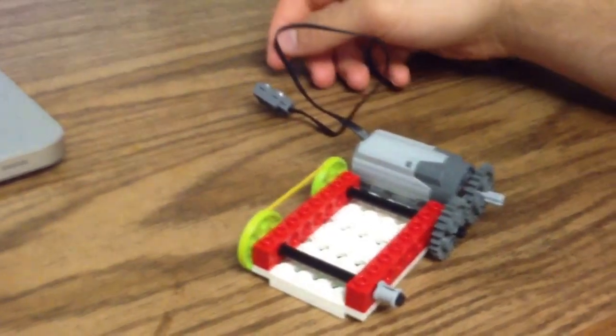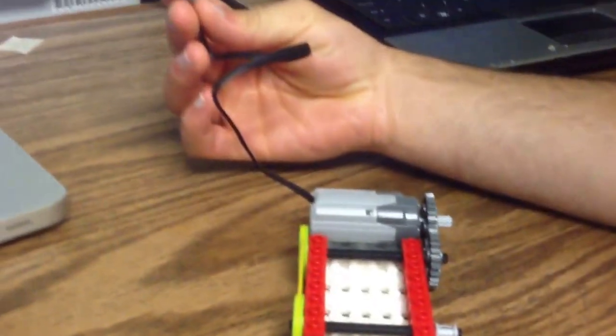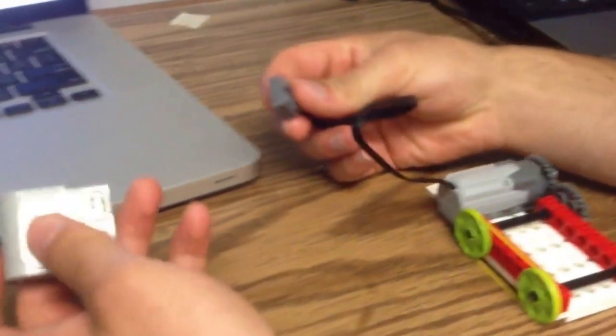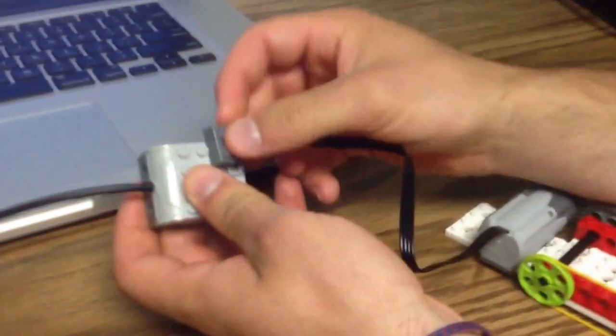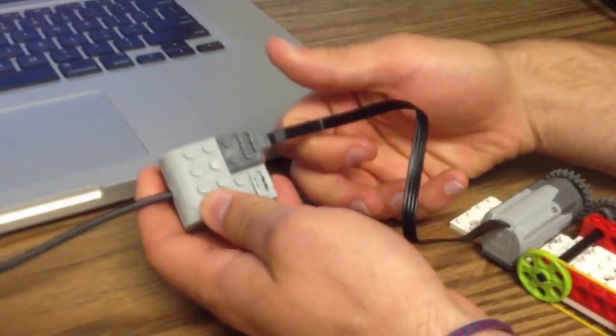So the Lego WeDo motor, as we talked about in another snippet, has this little attachment port. We take the Lego USB brick and plug the attachment port right on top, just like any other Lego brick.